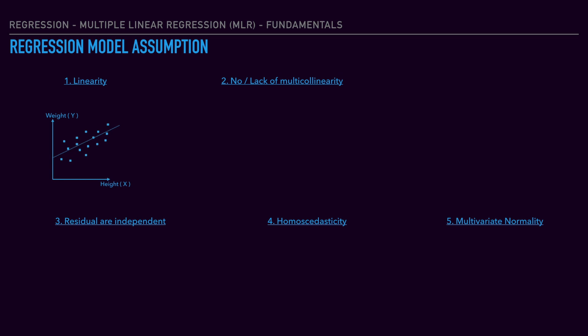Our second assumption is lack or no multicollinearity within independent variables. If we look at multiple independent variables, we check if there is correlation between the independent variables. There should be no correlation between each individual variable, for example age and male. If you look at male, there is no correlation between age and male.